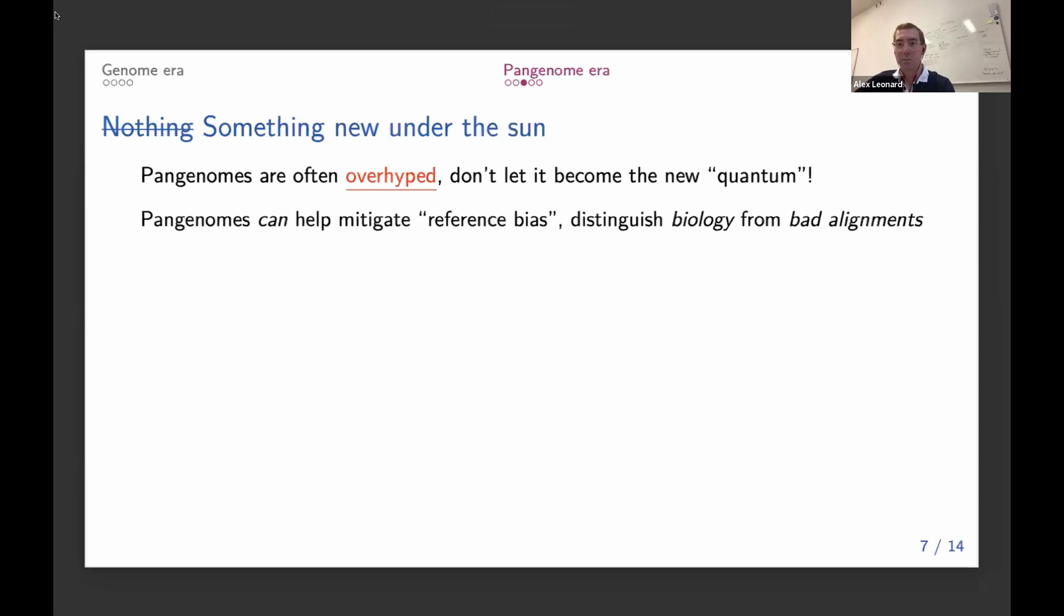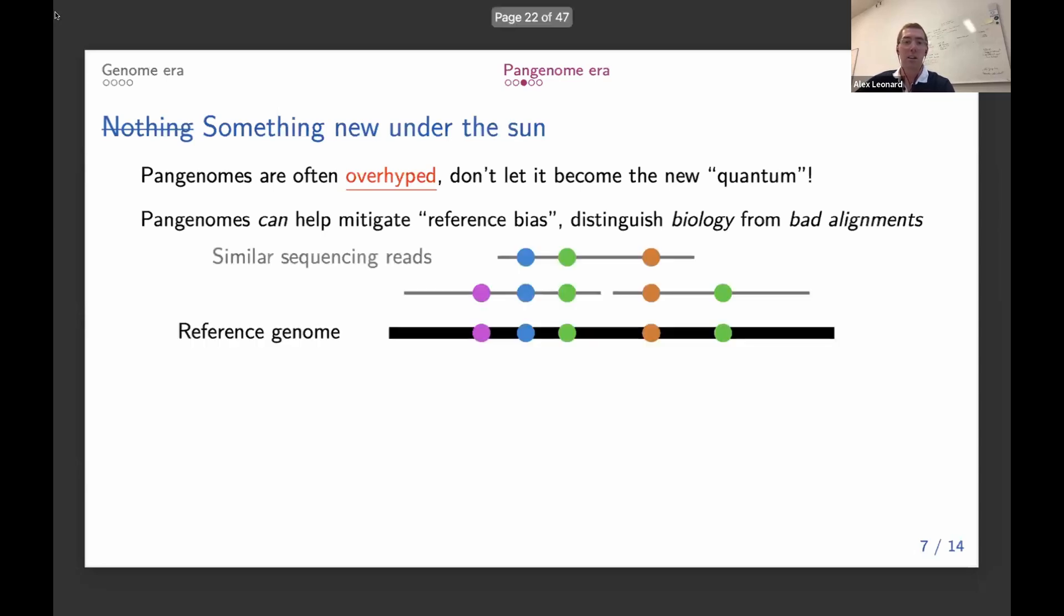That being said, they are helpful in some different contexts in replacing what we could not previously do. So one of these is mitigating what we call reference bias, where if we have sequencing reads that look more similar to a reference genome, containing mutations at the same places...